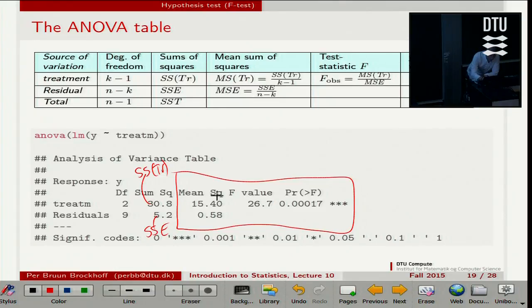It takes the 30.8 divided by 2 to get the mean square. And it takes the 5.2 divided by 9 to get the MSE. So it's just the degrees of freedom divided in the sums of squares. Then the f-value here is the 15.40 divided by 0.58. It gives me 26.7.